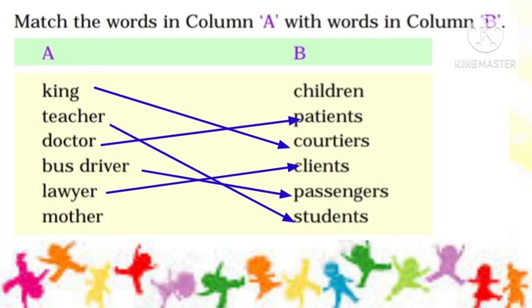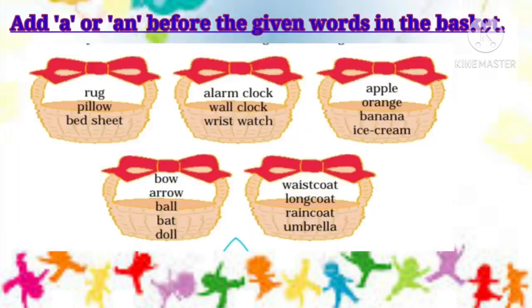Now add 'a' or 'an' before the given words in the basket. As you know, there are 26 letters in the English alphabet. The letters a, e, i, o, and u are vowels, and all other letters are called consonants. So there are five vowels in English — a, e, i, o, u — and twenty-one consonants.